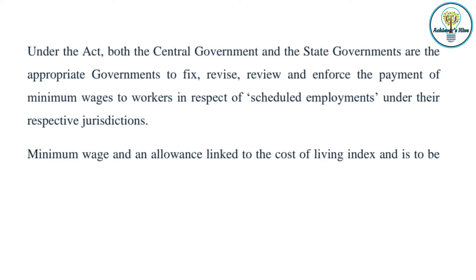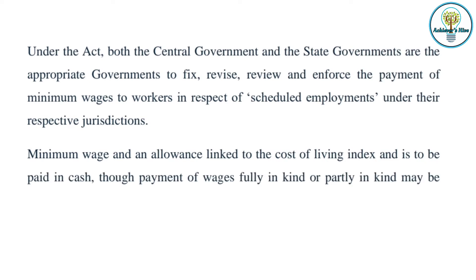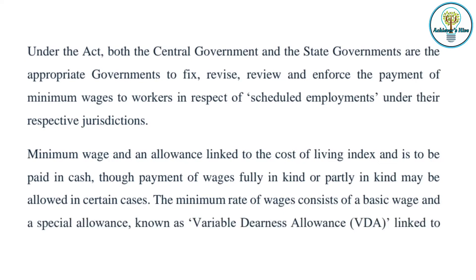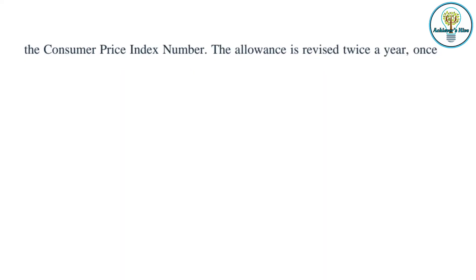The minimum wage includes an allowance linked to the cost of living index and is to be paid in cash, though payment of wages fully in kind or partly in kind may be allowed in certain cases. The minimum rate of wages consists of a basic wage and a special allowance known as Variable Dearness Allowance, linked to the Consumer Price Index number. This allowance is revised twice a year, once in April and then in October.